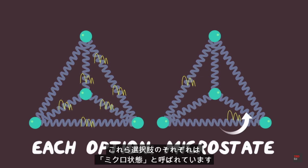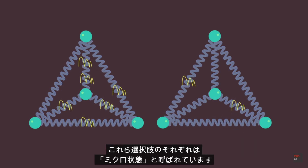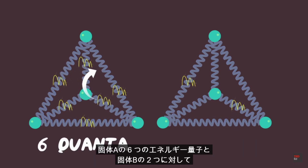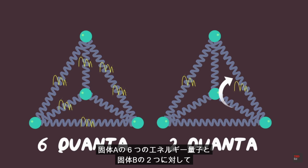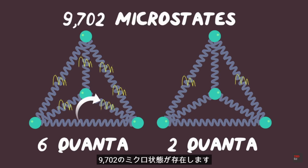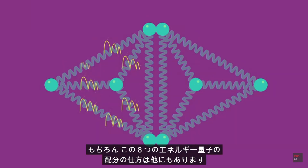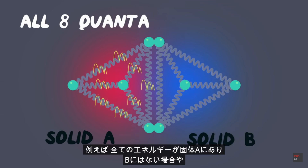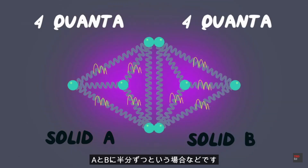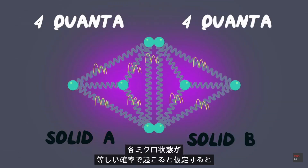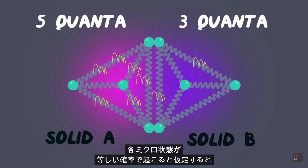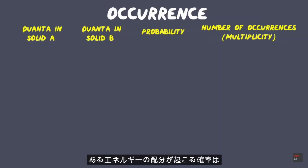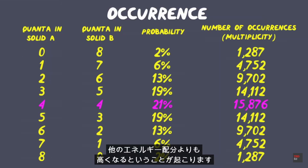Each of these options is called a microstate. For six quanta of energy in solid A and two in solid B, there are 9,702 microstates. Of course, there are other ways our eight quanta of energy can be arranged — for example, all of the energy could be in solid A and none in B, or half in A and half in B. If we assume that each microstate is equally likely, we can see that some energy configurations have a higher probability of occurring than others.